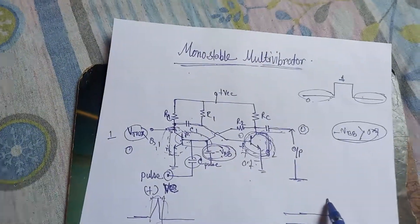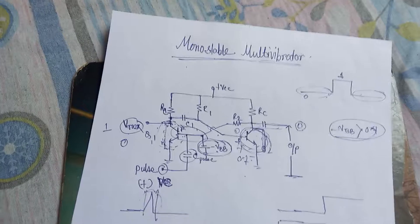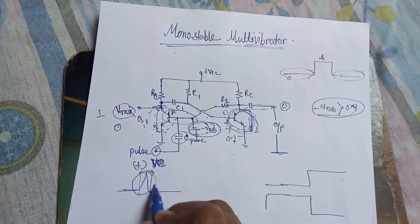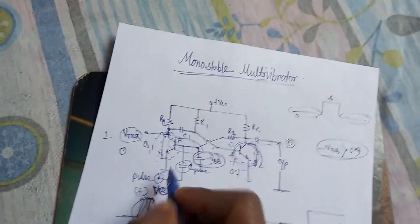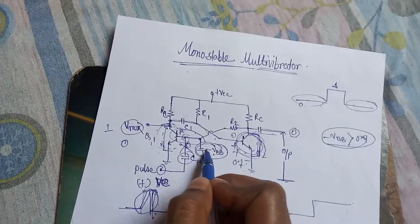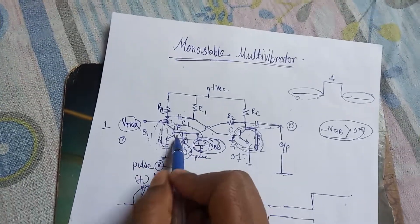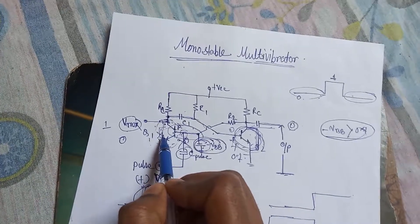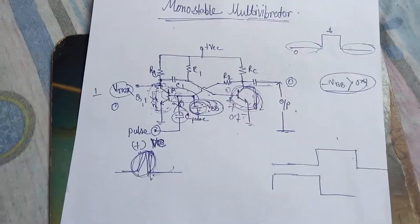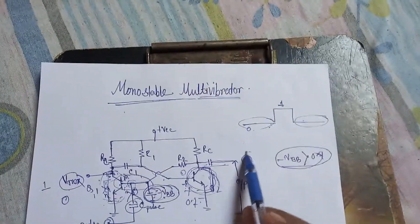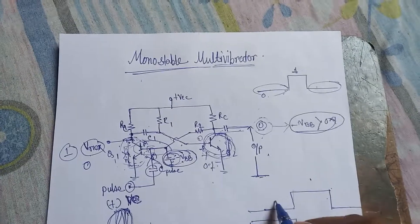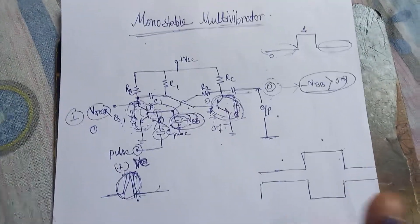Now the output turns into one and during the same duration the other output is zero. How long it will remain in this state depends on the duration of the pulse. When the pulse is removed, the negative voltage dominates again, bringing Q1 back to cutoff and Q2 back to saturation — output returns to zero. Since only one state is stable without any triggering, this circuit is known as a monostable multivibrator.